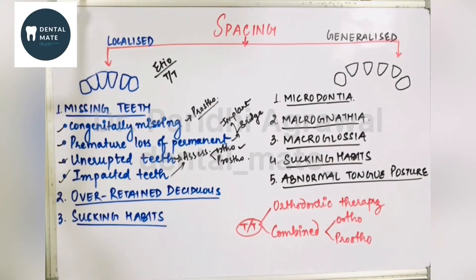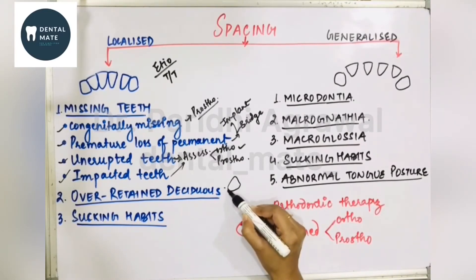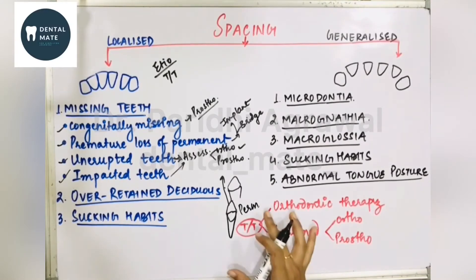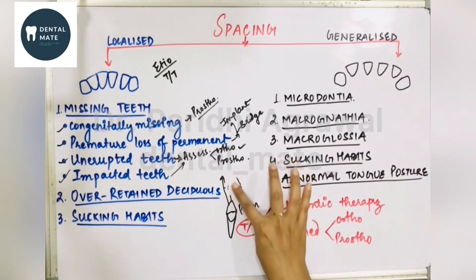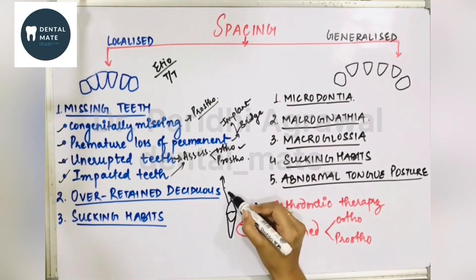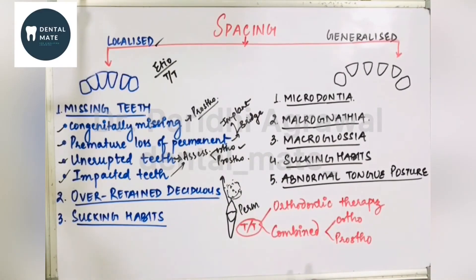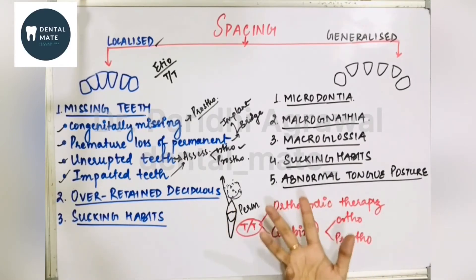Next cause of localized spacing is an over-retained deciduous tooth. In ectopic eruption, when the permanent successor erupts in an abnormal position and the deciduous tooth is subsequently shed or extracted, the extraction space is not covered, causing localized spacing. Sucking habits can also cause localized spacing — habit-breaking appliances should be given, or fixed orthodontic mechanotherapy for older patients. For over-retained deciduous tooth: observe, treatment plan, then extract — followed by orthodontic fixed mechanotherapy. Note: extract the over-retained deciduous tooth only when the permanent successor is present.